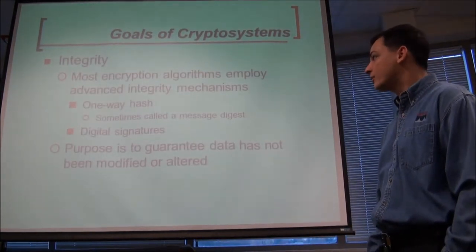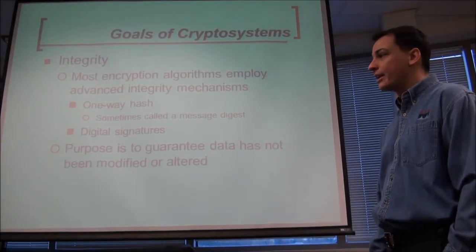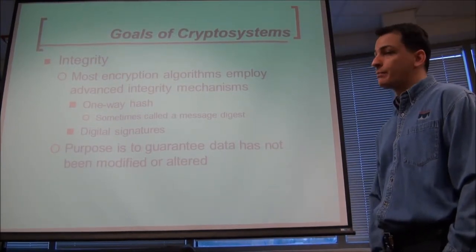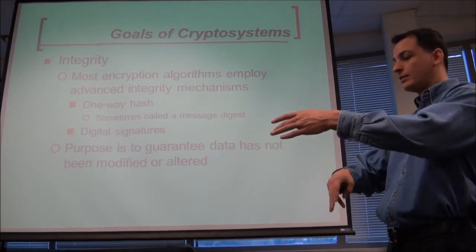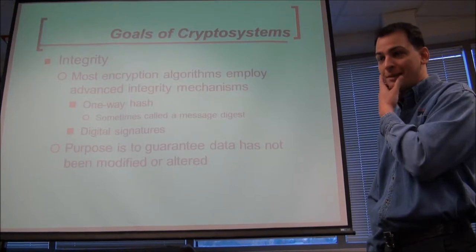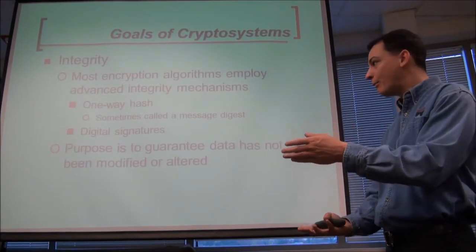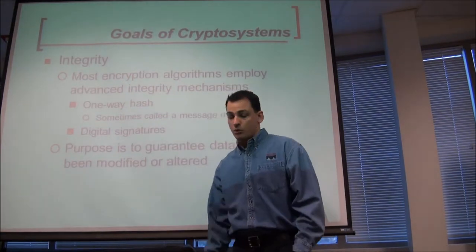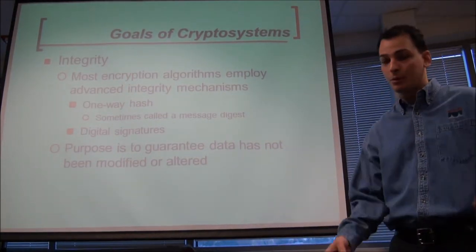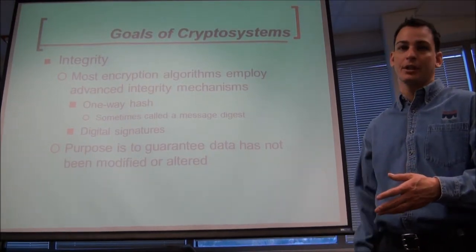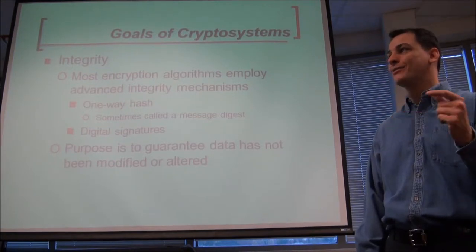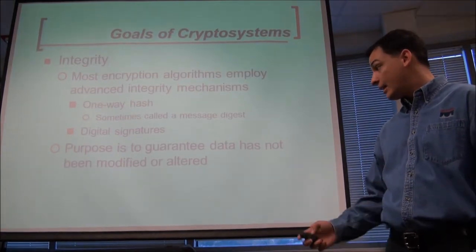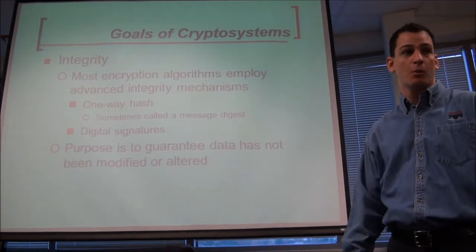Integrity is here to guarantee that nothing has been changed, modified, altered, or deleted. We can prove that through a one-way function — you take data, analyze it, and get an output called the message digest. On a digital signature, which is asymmetric, on the actual certificate itself you can see SHA, MD5, or other hash identifiers. The purpose is to guarantee that the data has not been changed, modified, altered, or deleted.